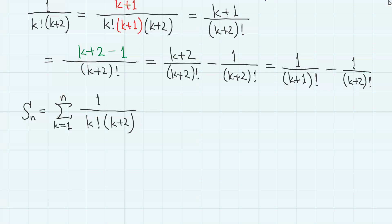Therefore, the partial sum Sn equals sigma 1 over k plus 1 factorial minus 1 over k plus 2 factorial from k equals 1 to n. So it is 1 over 2 factorial minus 1 over 3 factorial plus 1 over 3 factorial minus 1 over 4 factorial.